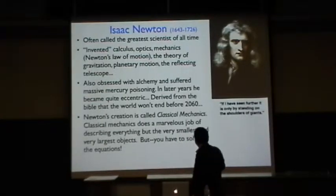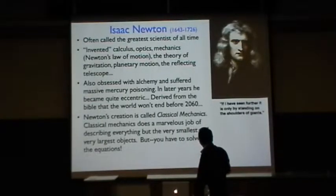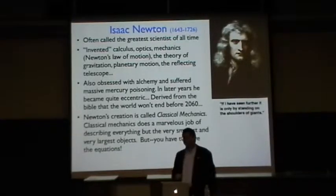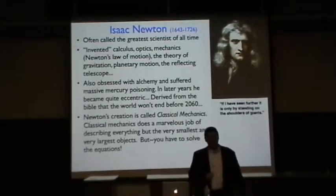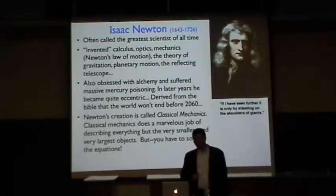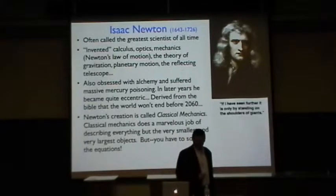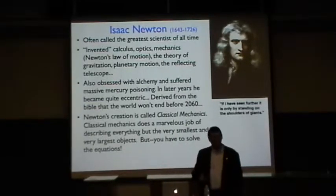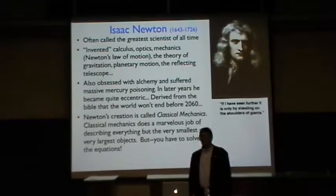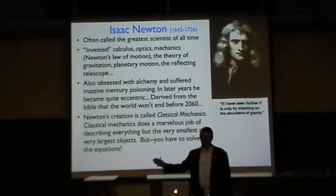He co-invented calculus, invented optics, mechanics, Newton's laws of motion, the theory of gravitation, planetary motion, reflecting telescope, a number of other things. Amazing accomplishment. Over on the right, we see this very modest statement: 'If I have seen further, it is only by standing on the shoulders of giants.' Newton was a very competitive person. It turns out that his chief competitor, Robert Hooke, was a very short man. Some historians think that Newton wasn't just being modest because there was a little dig: he stood on the shoulders of giants, but not on that short guy Hooke's shoulders.